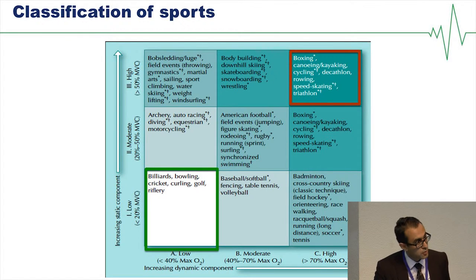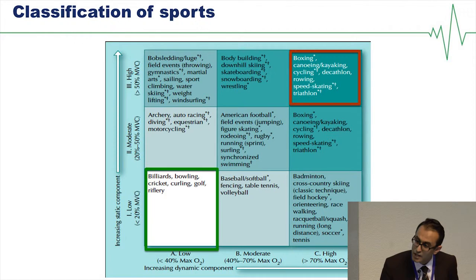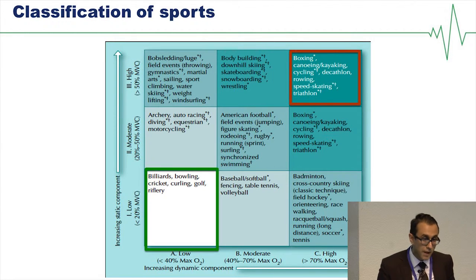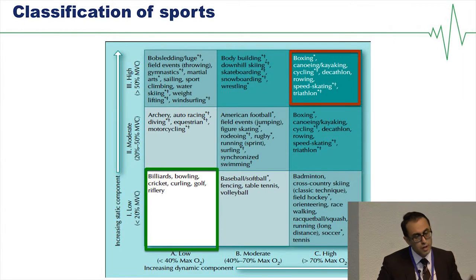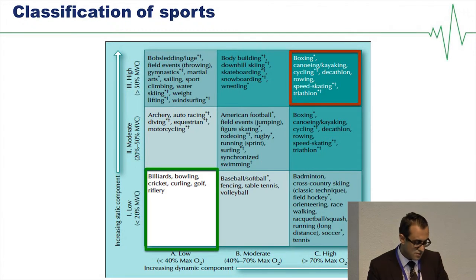The Class 1A group — the low-dynamic, low-static sports — includes bowling, curling, golf, and riflery. There may be some debate about whether cricket falls into this category, but generally speaking, this classification helps us categorize various sports and exercise modalities.